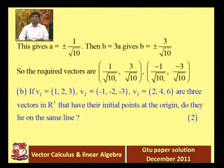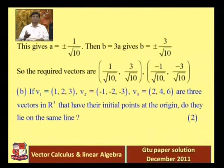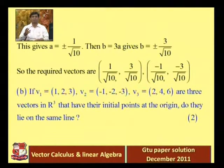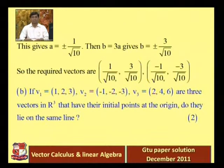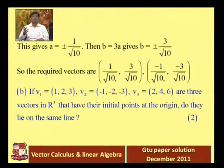Question 1a is complete. In this paper, all questions in question 1 ask for two marks — there are seven sub-questions. In the GTU paper format, there are seven questions total worth 14 marks each, and you have to attempt five out of seven questions.